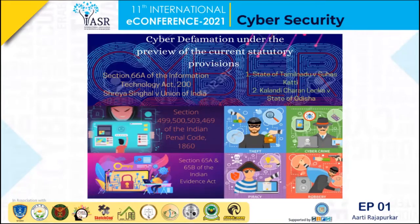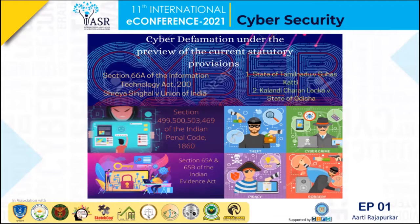Section 500 of the Indian Penal Code punishes this offense with an imprisonment which may extend to two years, or with fine, or with both. A person who fraudulently or dishonestly forges a document to harm the reputation, or to cause injury to another person, their reputation, or their property, will be held liable under Section 469 of the Indian Penal Code.